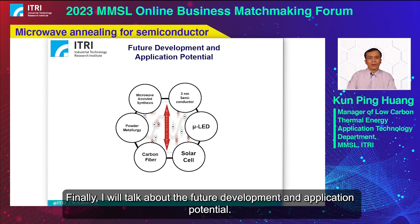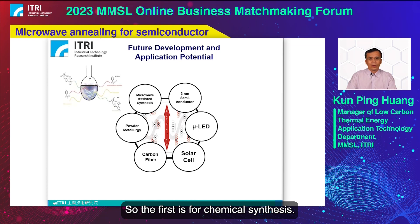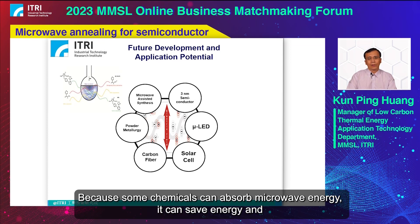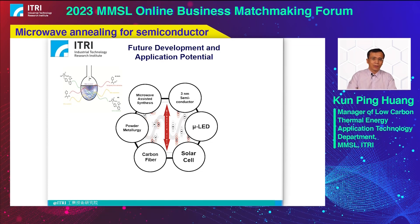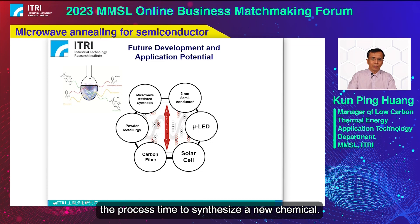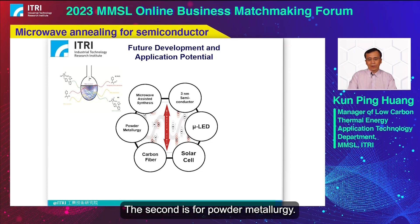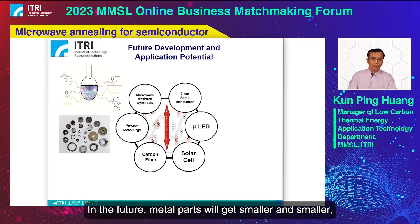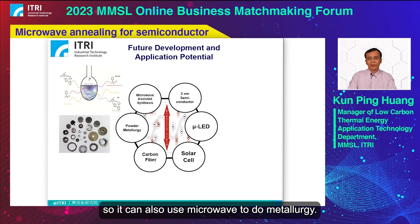Finally, I will talk about the future development and application potential. The first application is chemical synthesis — because some chemicals can absorb microwave energy, it can save energy and process time to synthesize new chemicals. The second is powder metallurgy. As metal parts become smaller and smaller, microwave energy can also be used for metallurgy.